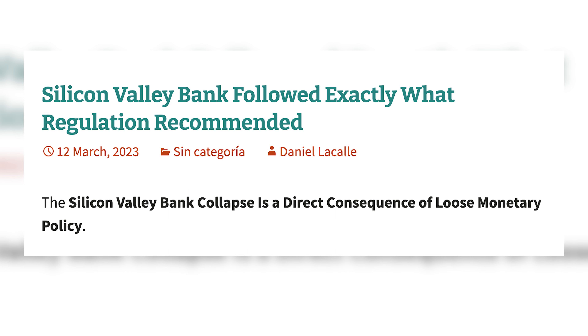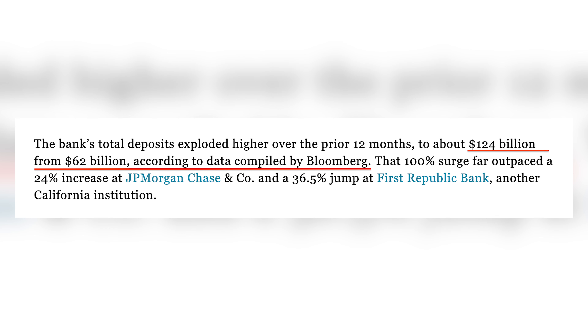In a recent article titled 'Silicon Valley Bank Followed Exactly What Regulation Recommended,' Daniel Lacalle lays out a very interesting perspective. Silicon Valley Bank's mistake during the era of zero interest rates was that it took full advantage of lax monetary policy and regulations. As the saying goes, don't fight the Fed — and that's exactly what they did. The bank's total deposits in 2021 exploded to about $124 billion from $62 billion as the tech sector was booming — a 100% surge that far outpaced a 24% increase at JPMorgan Chase and a 36.5% jump at First Republic Bank. New tech companies were IPO-ing every single week and everyone wanted a piece. More than 40% of the bank's assets were long-dated treasuries and mortgage-backed securities, while the rest were new tech and venture capital investments. SVB followed the mainstream rulebook — low-risk assets to balance the risk of venture capital investments. The entire asset base of SVB was one single bet: low rates and quantitative easing for longer.